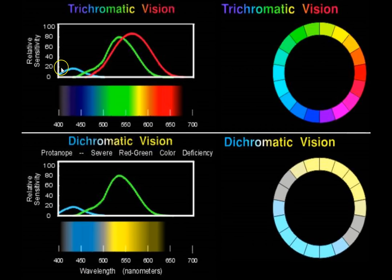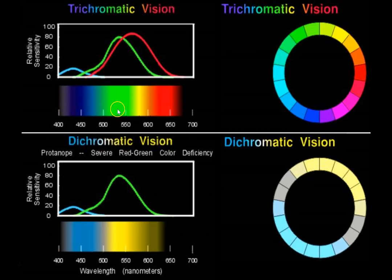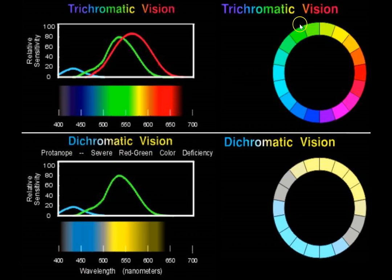This is showing you the relative sensitivity of the short, medium, and long wavelength cones in a person with normal color vision. This is showing you the range of the visible spectrum that they can perceive. And this shows you roughly what the color wheel would look like for this individual.